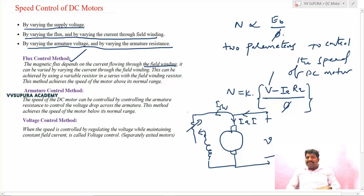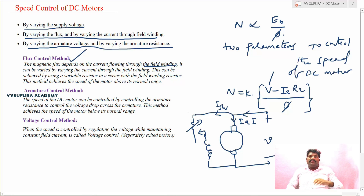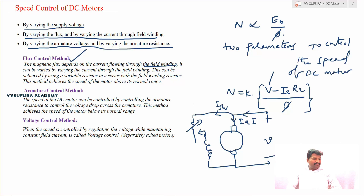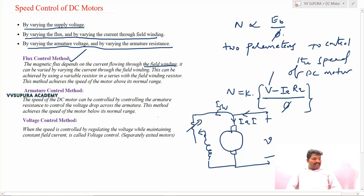In the flux control method, when the rheostat is at minimum position, more current flows, producing more flux and giving minimum speed. As resistance increases, speed increases up to its maximum value. From this, we can conclude that the flux control method provides above-rated speeds from the normal speed range.